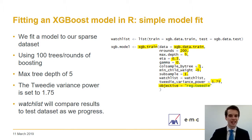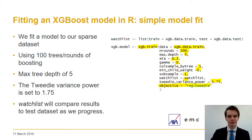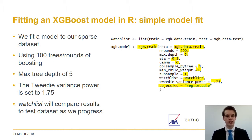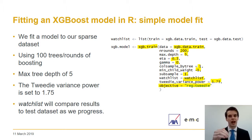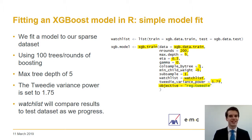A great feature of XGBoost we've implemented is the watchlist. A watchlist allows us to view the error in the train set and also the test set at each step of the modelling process. You'll see the modelling error in the train set go down and you can evaluate how this affects the test set — the data the model hasn't seen before.